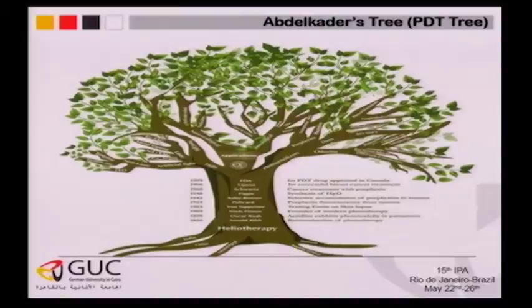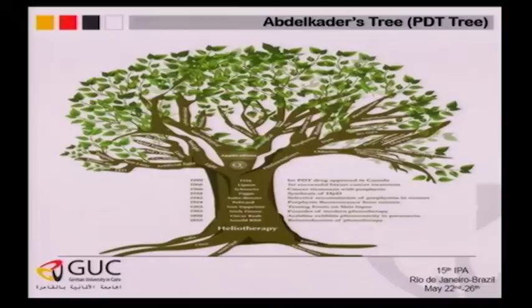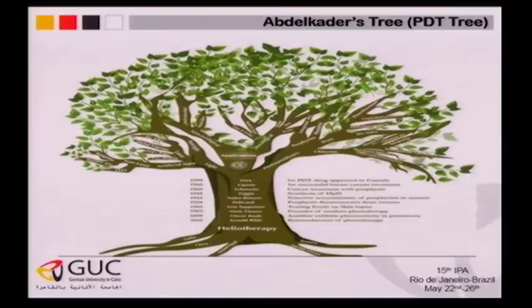I would like to remind you about the history of PDT — it is not new. It is more than 5,000 years old, starting with the Egyptians, the Indians, and the Chinese. The work of Arnold Raab developed from 1905 until 1999, when the first drug was approved by FDA in Canada. The light sources evolved from sunlight to the most sophisticated instruments and lasers, and photosensitizers developed from porphyrin and hematoporphyrin to the newest ones existing in the market now.